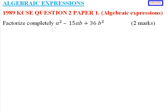Let's find two numbers such that when you add them you get -15b and when you multiply them you get 36b². So we have M + N = -15b and M × N = 36b².